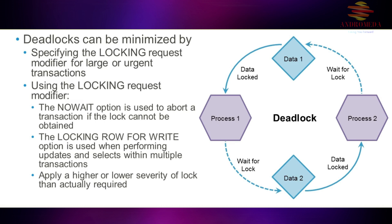You can also try adjusting the lock level — applying higher or lower severities than is actually required. This comes down to understanding what is happening between the applications and the requests; for example, if a particular transaction is locking an entire table when perhaps it should only be locking a few records.